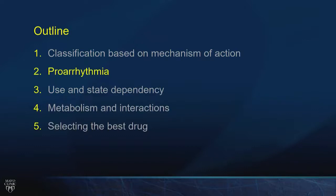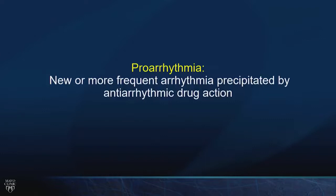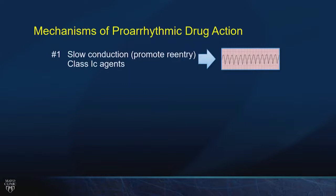Proarrhythmia is defined as new or more frequent arrhythmia precipitated by an antiarrhythmic drug. There are three basic types. The first is seen with sodium channel blockers that slow conduction — these drugs can promote reentry because the slower the wavefront propagates, the more prone it is to snake its way around a scar and complete a loop. If you see monomorphic ventricular tachycardia in somebody on flecainide, think proarrhythmia. That's the reason for the black box warning against flecainide or propafenone in anyone with prior myocardial infarction or scar.